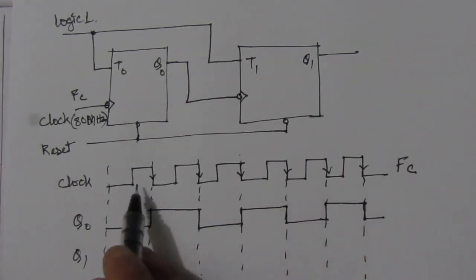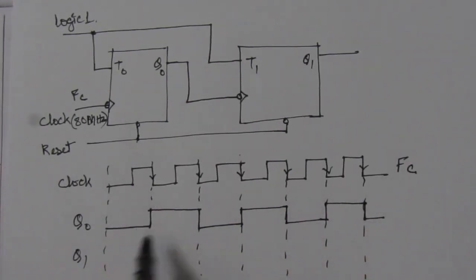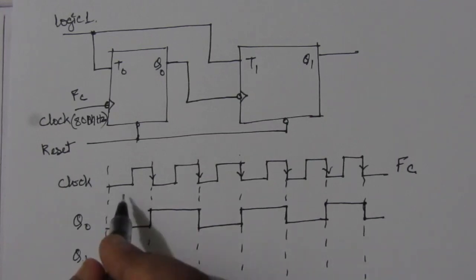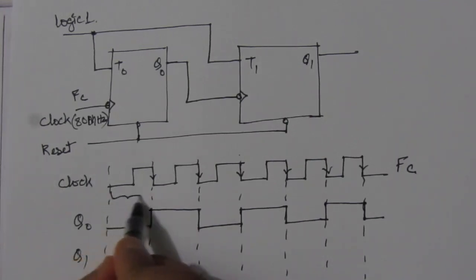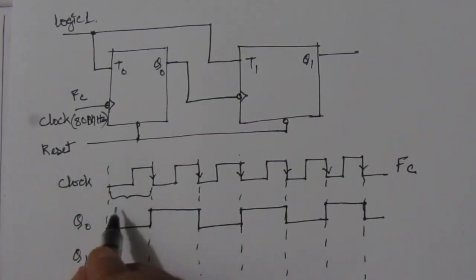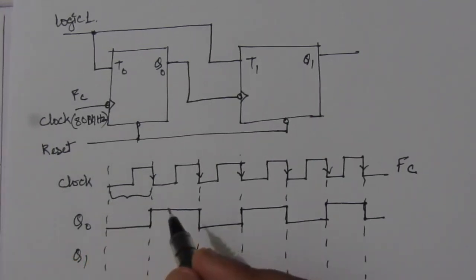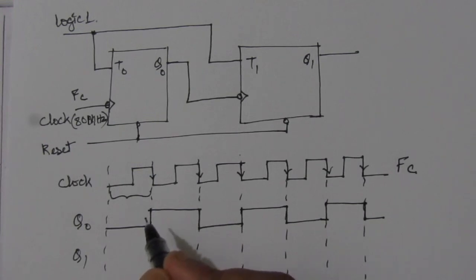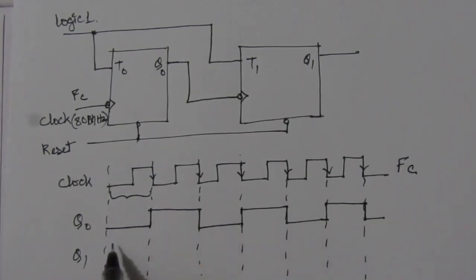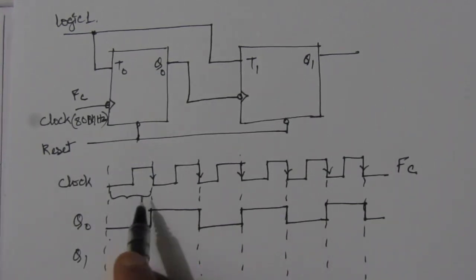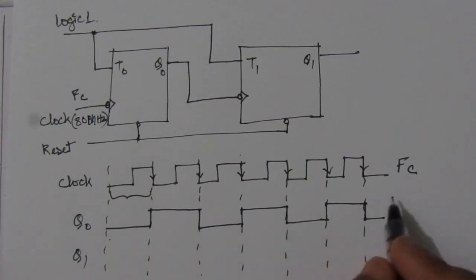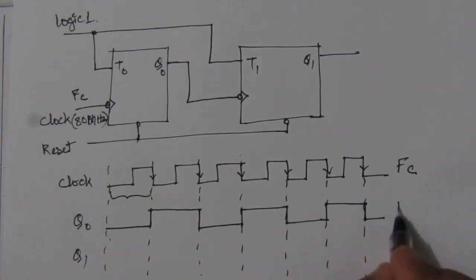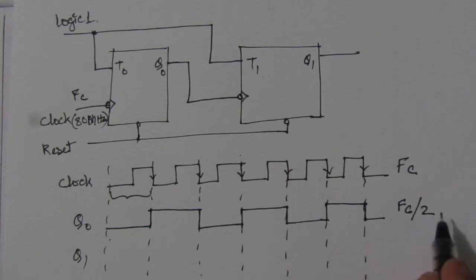The Q0 frequency is half of the input clock frequency. We can see that from one transition to the next, the time period is twice that of the input clock. So the frequency of Q0 is Fc divided by 2, which is 80 MHz / 2 = 40 MHz.